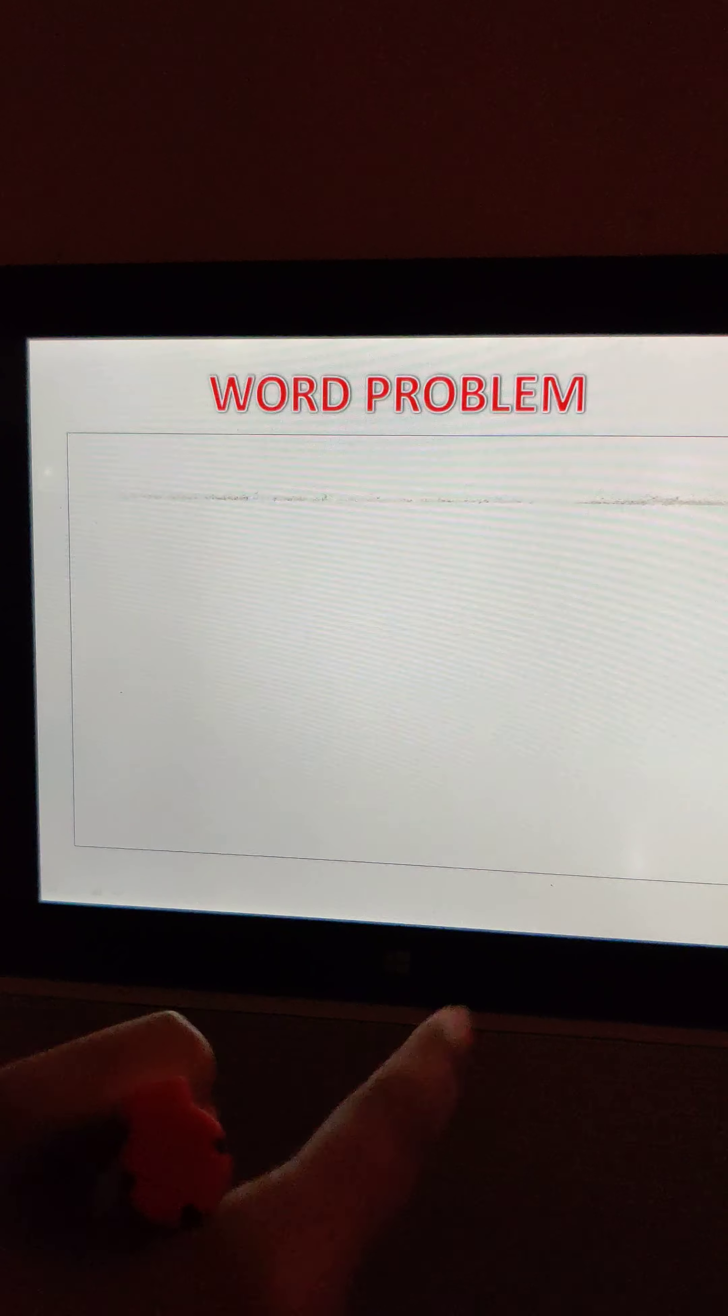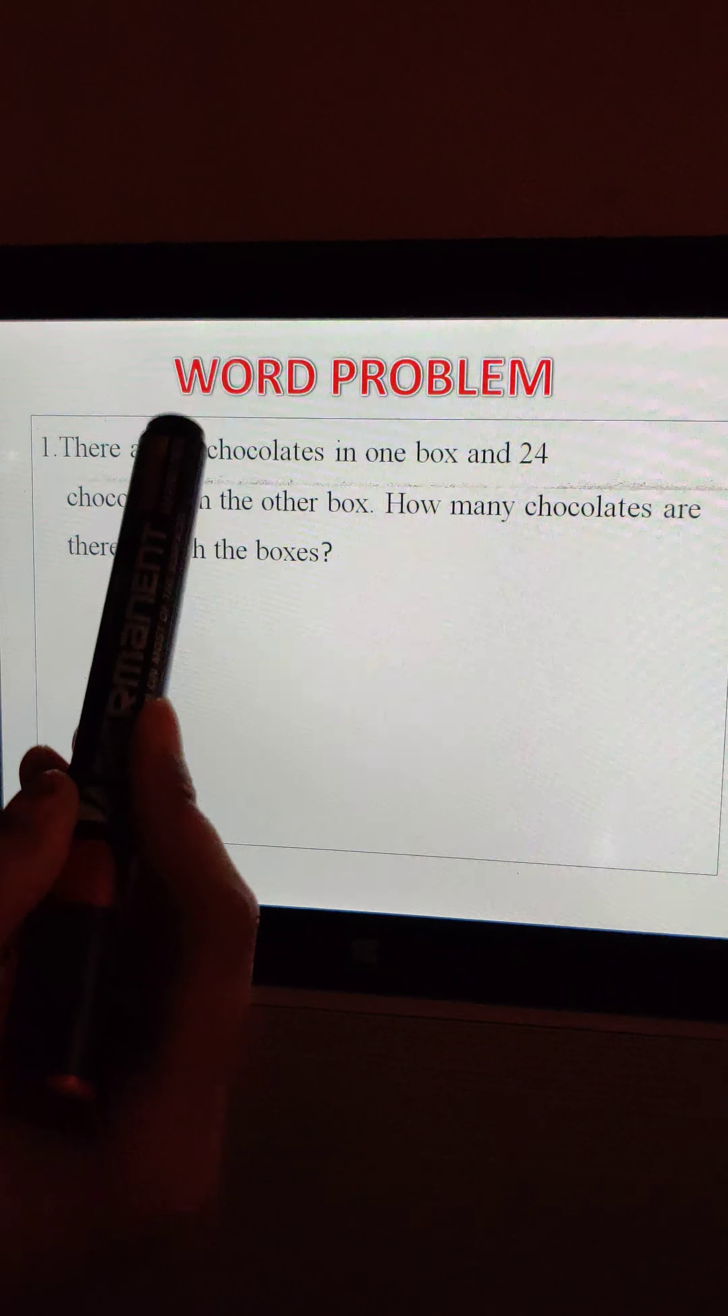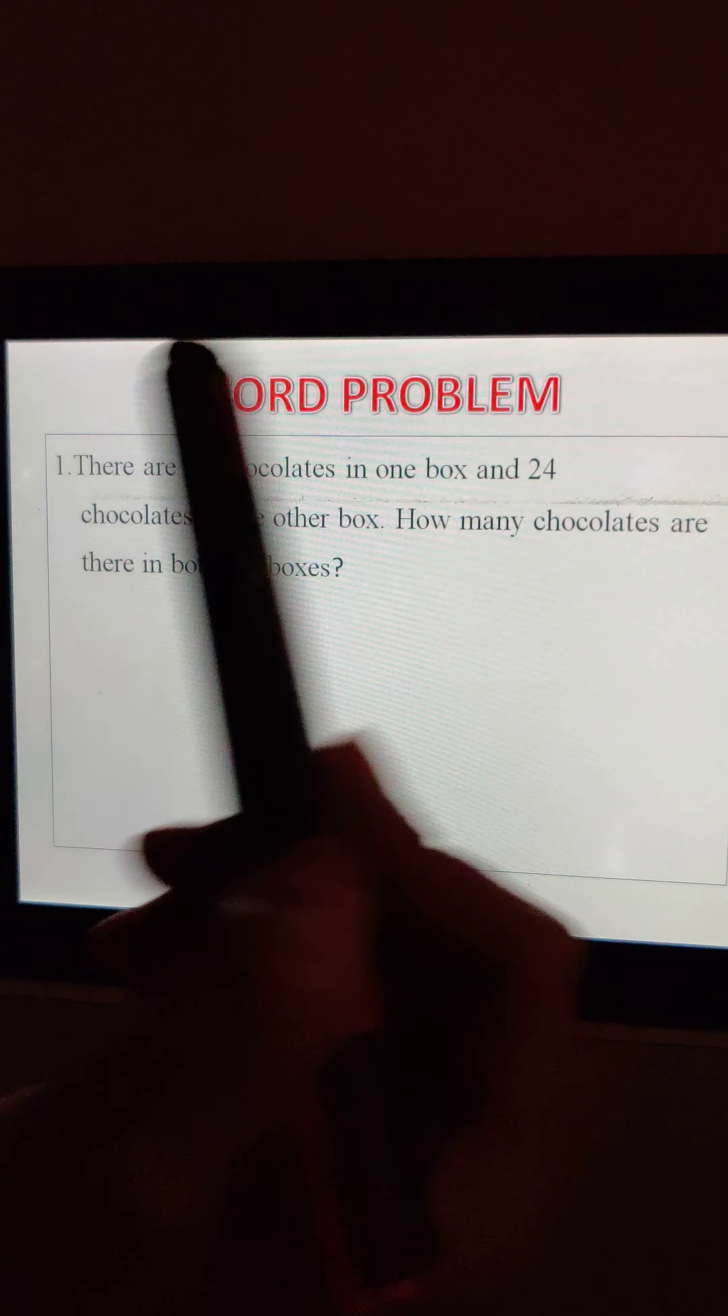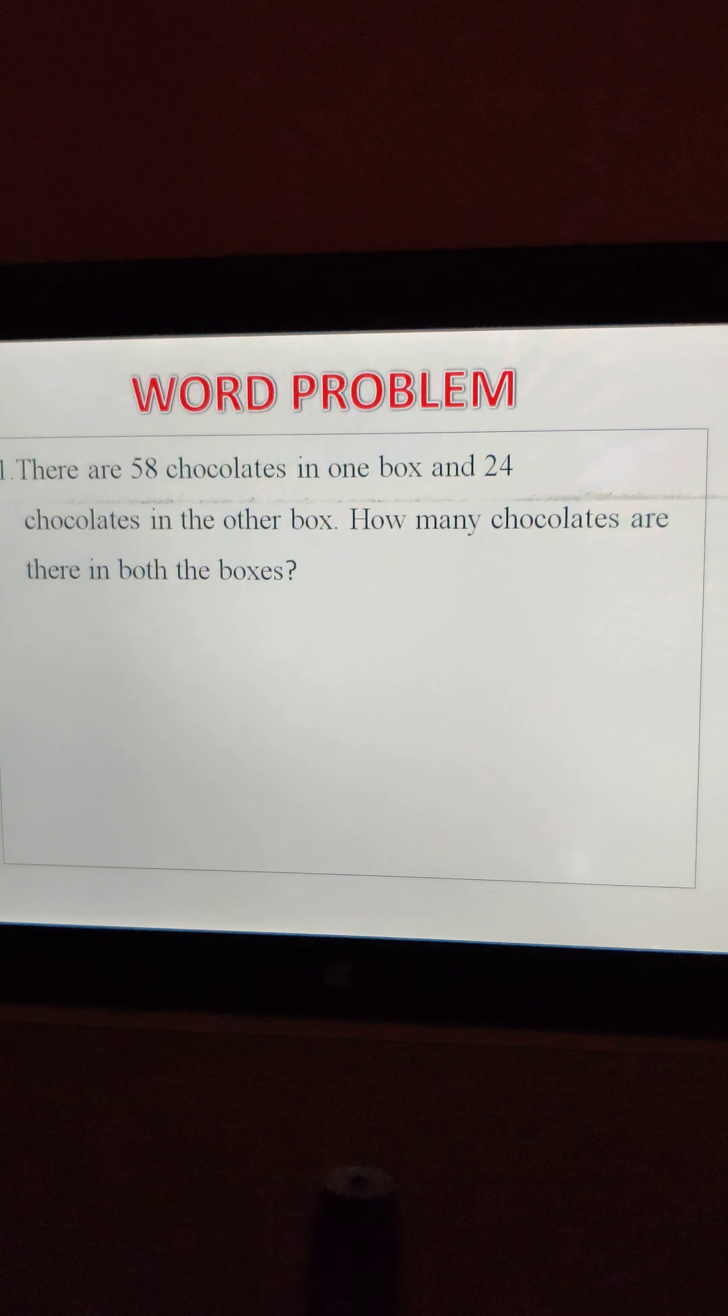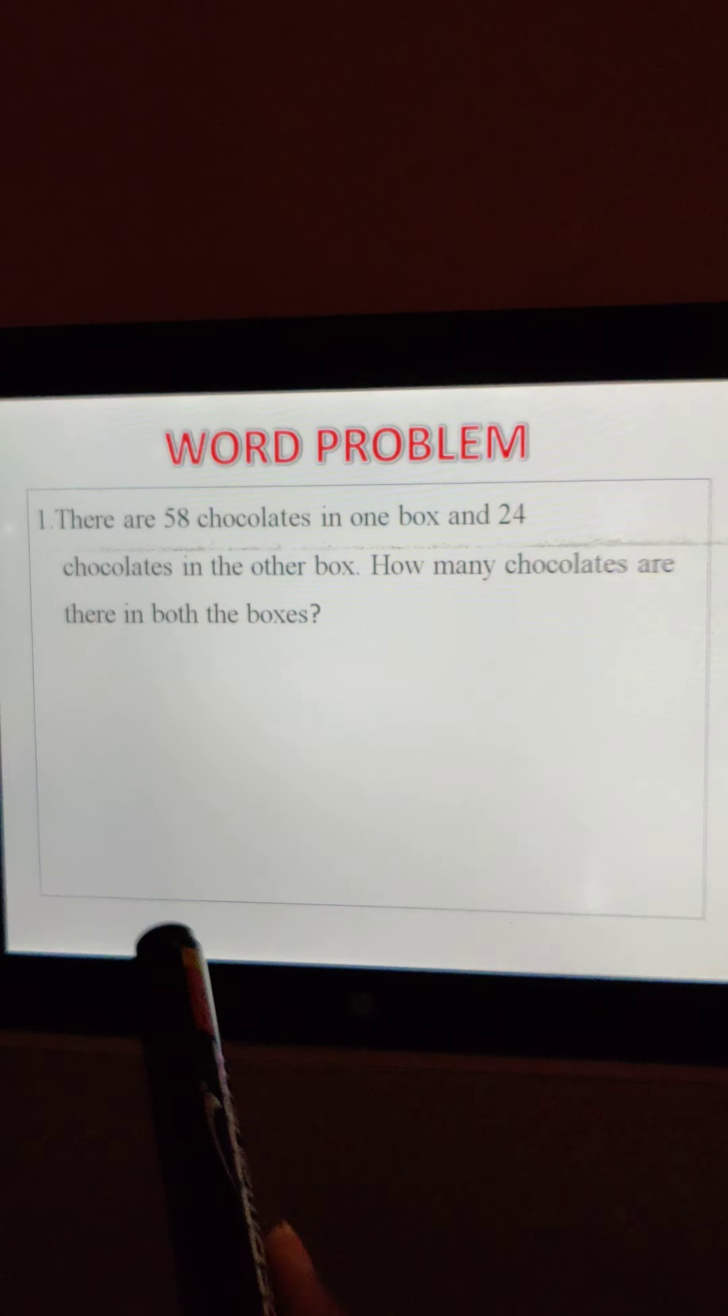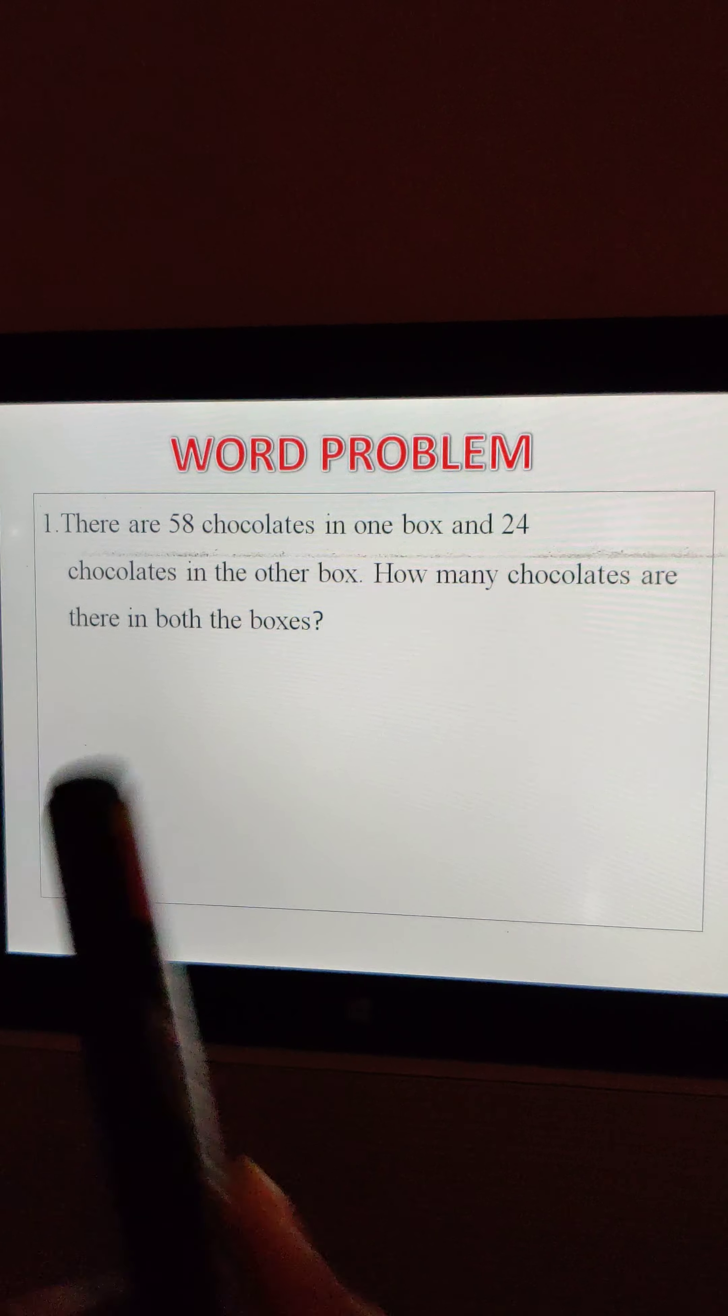Word problems, okay? See, I am reading. There are 58 chocolates in one box. In one box, how many chocolates? 58. And 24 chocolates in the other box. In other box, how many chocolates? 24. How many chocolates are there in both the boxes? That we have to find out.